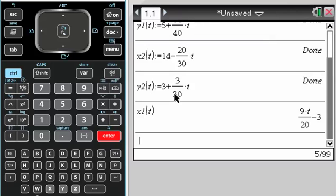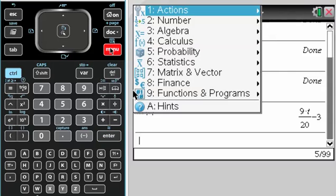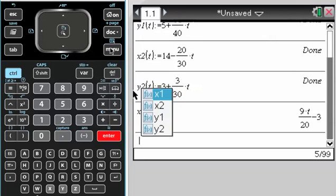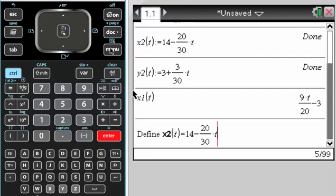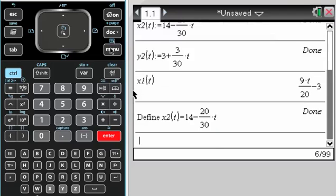If you have the non-CAS, it actually probably won't do that. It might give you some kind of error, but if you do menu, actions, and then recall definition, it'll recall the definition for you.